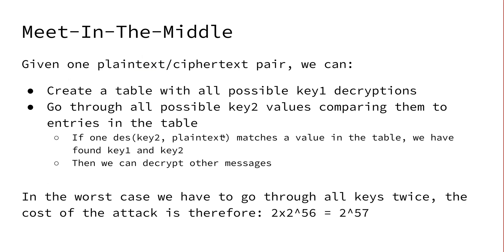So what is the security level? Well, if you think about it, we had to decrypt with all possible key1 values — that was 2^56 values sorted in a table — and then in the worst case go through all possible key2 values, which is again 2^56 possibilities. So we only had to go through 2 to the power of 56 keys two times. We actually just had a security level of 2 to the power of 57, which is just one bit more than with single DES. So by applying the encryption twice, we have gained only one bit of additional security.